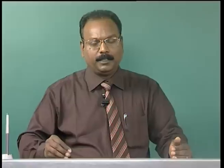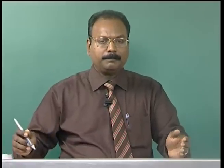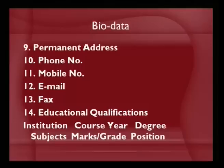Then present address — that is the current address for communication — which is different from permanent address. Present address is the place where the candidate is currently working or living, whereas permanent address is where his parents are or his actual ancestral home is. This is followed by phone number, mobile number, email ID, fax, and then educational qualifications. Educational qualifications include details of institution, name of course, year passed (sometimes full duration with date of joining and leaving), degree, subjects briefly, marks or grade in percentage, and position or rank.